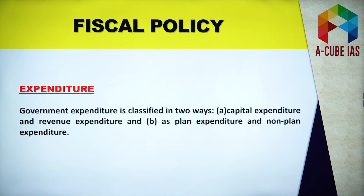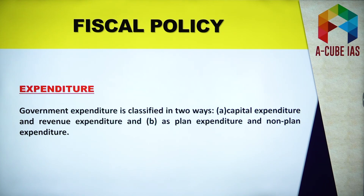Now let's talk about plan expenditure and non-plan expenditure. After independence, our country adopted the path of planning to achieve economic development. Under planning, provisions were made in the government budget for the concept of five-year plans. Every year, the government makes payment to achieve the goals set under five-year plans — this is known as plan expenditure, as payment is being made according to a fixed plan. Non-plan expenditure is routine expenditure — on police, judiciary, water supply, sanitation, legislatures — all of which constitute routine expenditure.